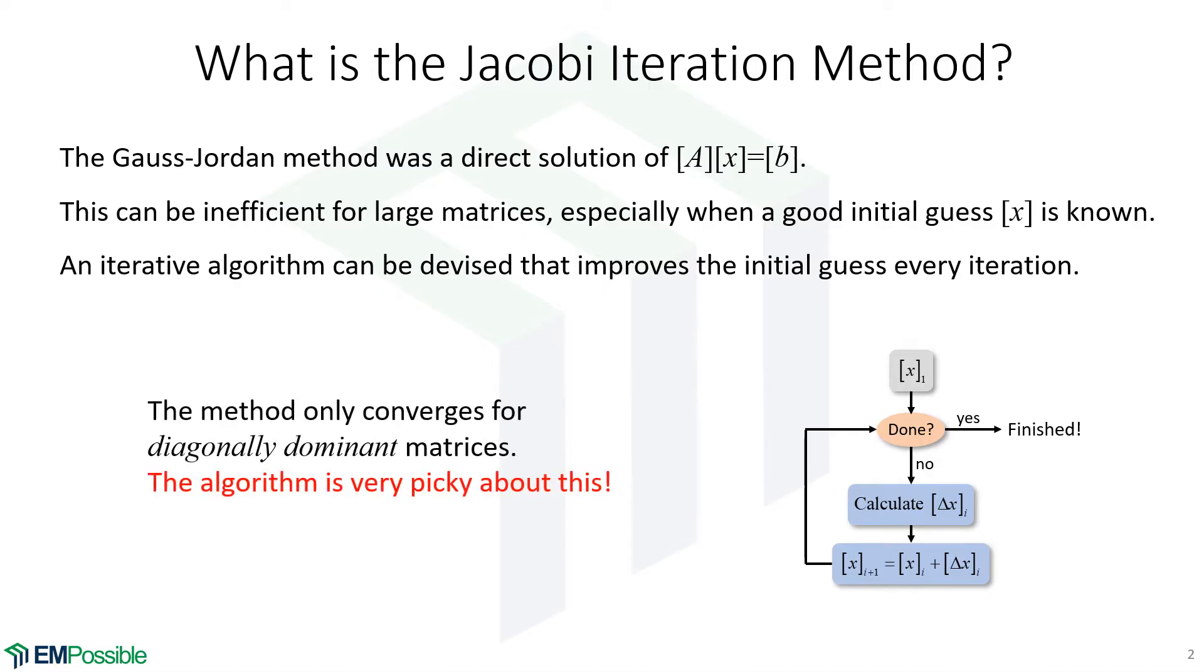So this Jacobi Iteration Method, it turns out it has one sensitivity to it. Our matrices have to be something called diagonally dominant. And the algorithm is very picky about this. If we do not have a diagonally dominant matrix, it very likely will explode.